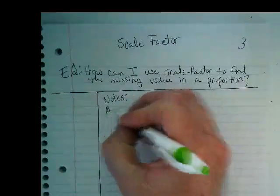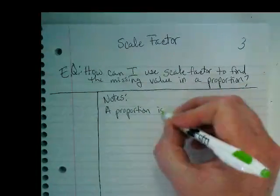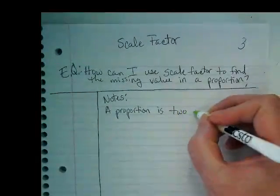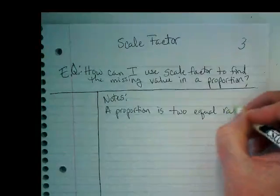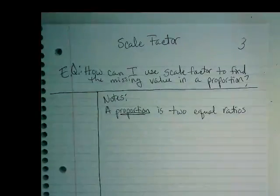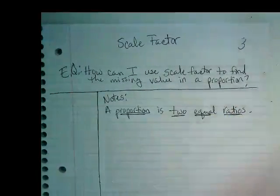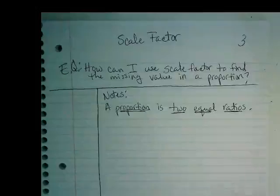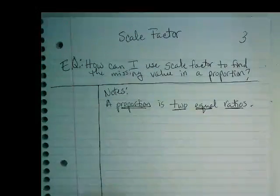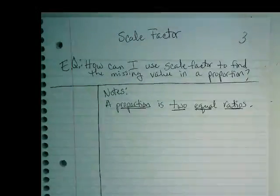We're going to start off with a definition. A proportion is two equal ratios. The word we're defining here is proportion. It's two equal ratios.